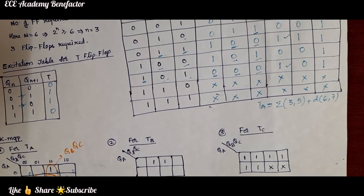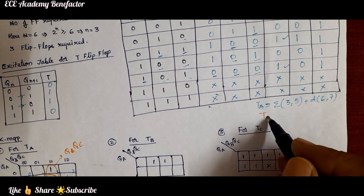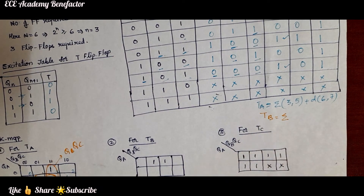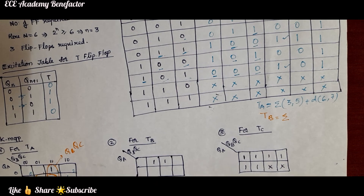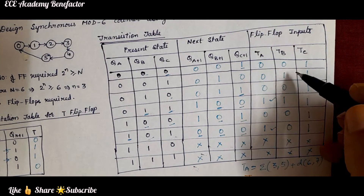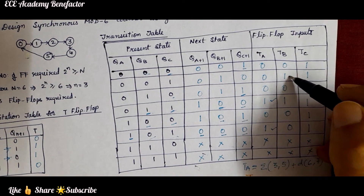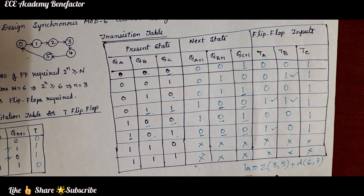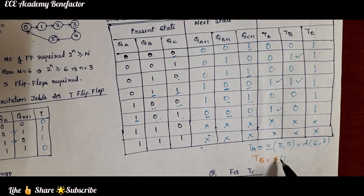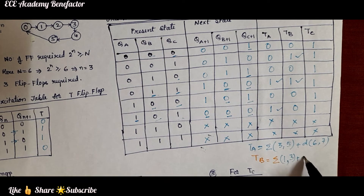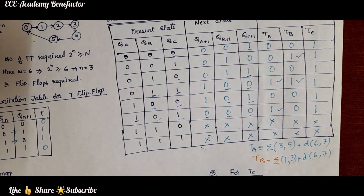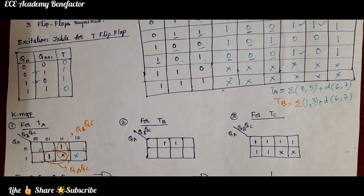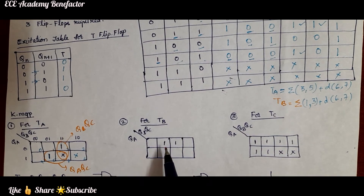Coming to TB, TB equals the summation where TB is 1. TB is 1 at positions 1 and 3, with don't cares at positions 6 and 7. We draw the K-map for TB placing 1s at cells 1 and 3 and don't cares at cells 6 and 7.